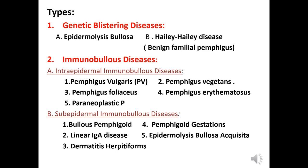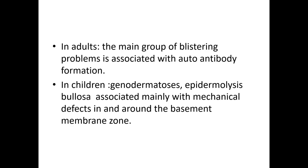Immunobullous diseases can be divided according to the level of the bulla or vesicle into intraepidermal immunobullous diseases, which are superficial, and the deeper subepidermal immunobullous diseases. The difference between adult and childhood types is mainly in the etiology: in children most diseases are genetic, while in adults most are autoimmune.